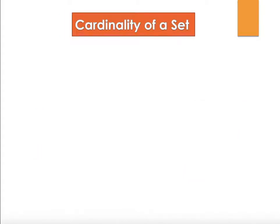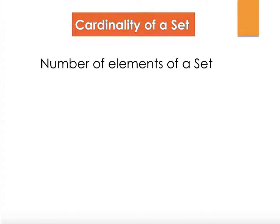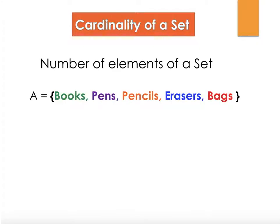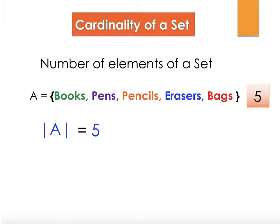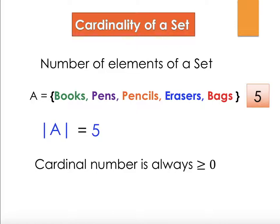Let's look at the cardinality of a set. Cardinality is the number of elements in a set. Here we have A equal to books, pens, pencil and so on — the number of elements is 5. To write cardinality, we put the set name between parallel lines and set it equal to the number of items. So set A has 5 items — that's the cardinality. One thing to note: cardinality is always greater than or equal to 0. You may wonder how cardinality can be 0 — can there be a set with no elements? We'll look at that next.